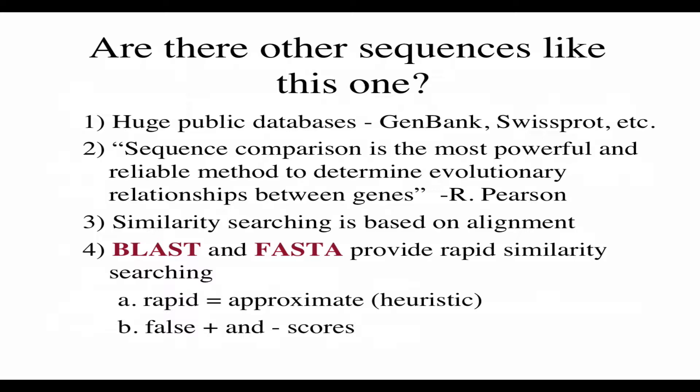When we ask the simplest question — are there other sequences like this one — it requires that we have some sort of database of sequences, something like GenBank, which is very comprehensive, or SwissProt, which is very well annotated. As a quote from Bob Pearson: sequence comparison is the most powerful and reliable method to determine evolutionary relationships between genes. It's been very revolutionary for the whole world of taxonomy.